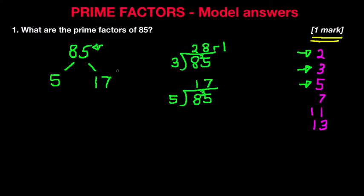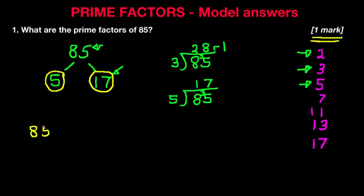So now we have the number 17. Even though we didn't write it down in our prime numbers list, 17 is the next prime number. Therefore we have worked out the prime factors of the number 85. It is 5 and 17. 17 cannot be divided any further. So the prime factors of 85 are 5 times 17 — the two prime numbers that when multiplied give the answer 85. And for that we're going to give ourselves a tick.